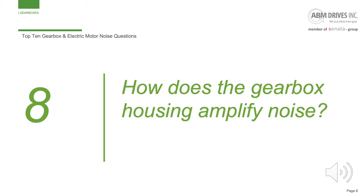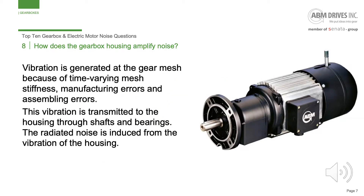Number 8: How does the gearbox housing amplify noise? Vibration is generated at the gear mesh because of time-varying mesh stiffness, manufacturing errors, and assembling errors. This vibration is transmitted to the housing through shafts and bearings. The radiated noise is induced from the vibration of the housing.